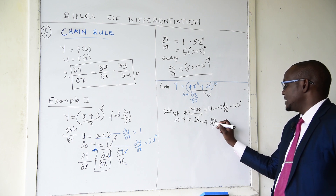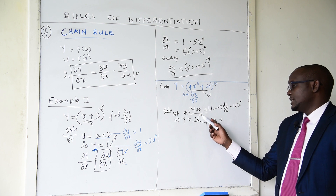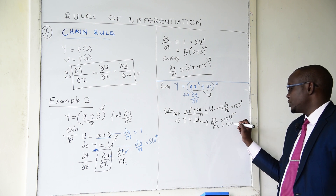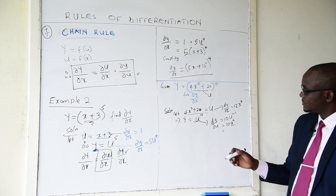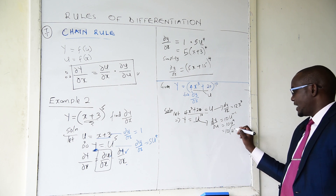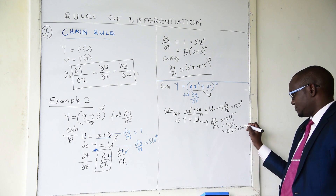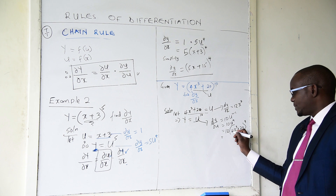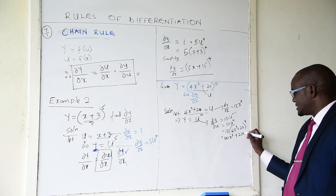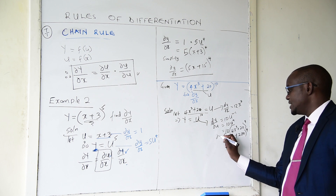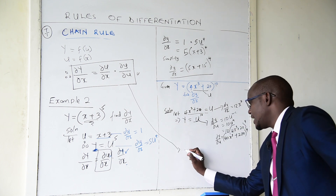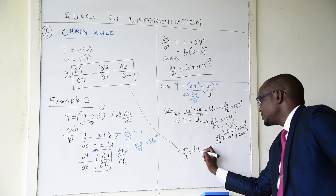Next, we find dy/du by differentiating u to the power 10: 10 multiplied by 1 gives 10u to the power 9. Since u equals 4x cubed plus 20, substituting back gives dy/du equals 10(4x cubed plus 20) to the power 9, which simplifies to (40x cubed plus 200) to the power 9.